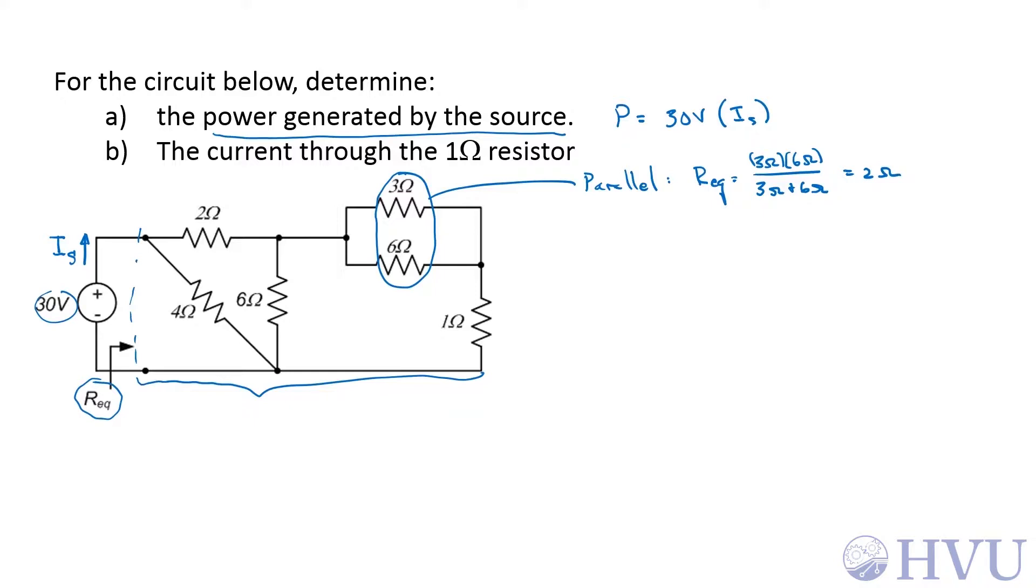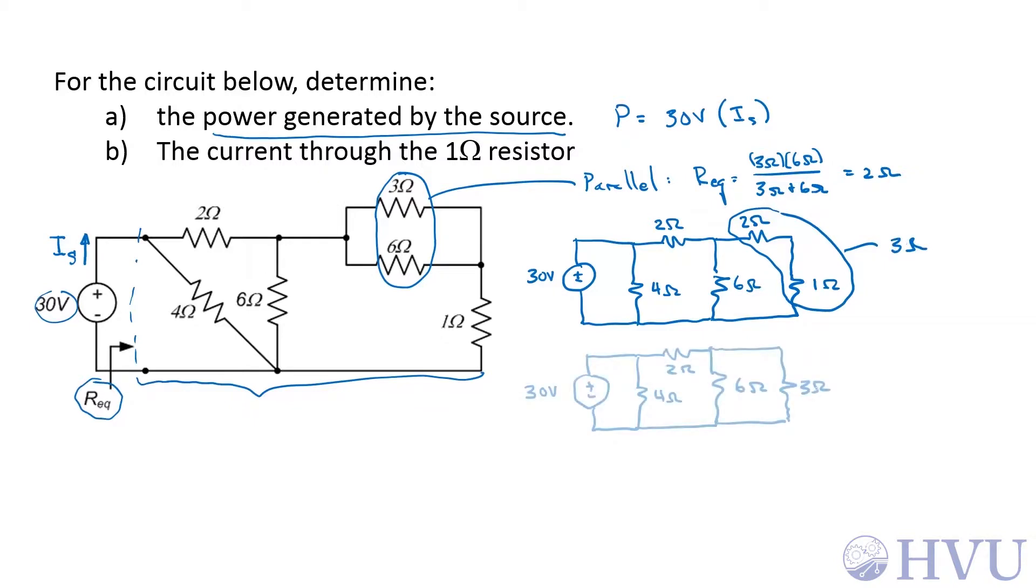Now I'm going to redraw this circuit with that in place and look for more parallel and series combinations. Now these two are in series, so adding them together becomes an equivalent 3 ohm resistance. Now this 3 ohm and that 3 ohm resistance are in parallel, that will result in the same equivalent resistance as this combination, so this becomes 2 ohms.